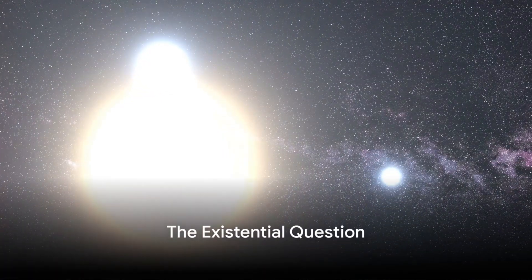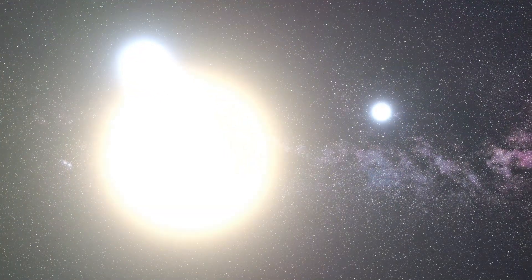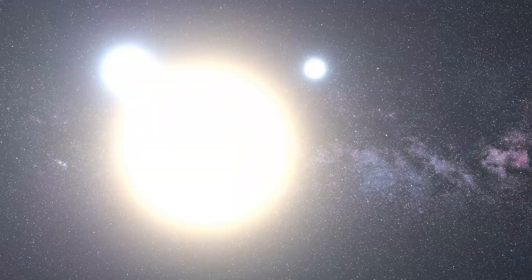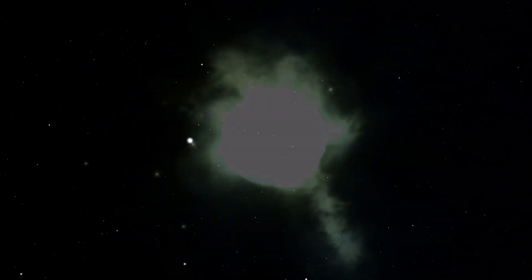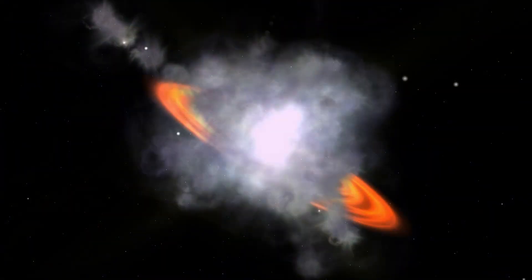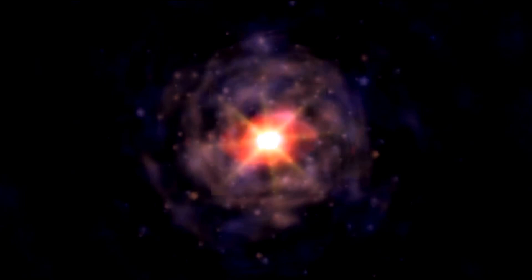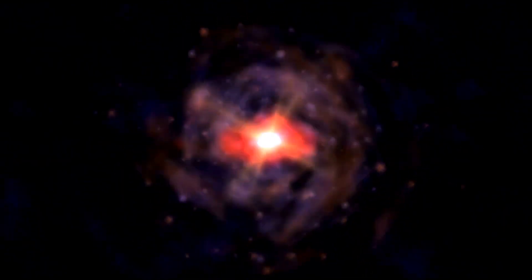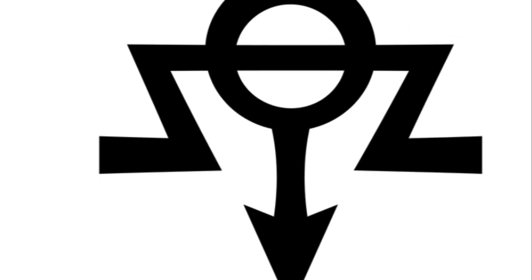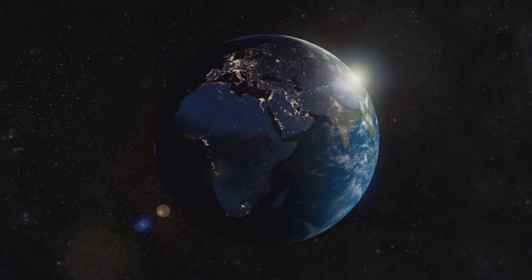Have you ever wondered if our Sun has a dark twin lurking in the far reaches of our solar system? Picture a mysterious celestial body, a theoretical star known as the Nemesis Star. The cosmos is vast, and there's so much we don't know. This is where the theory of the Nemesis Star comes into play.